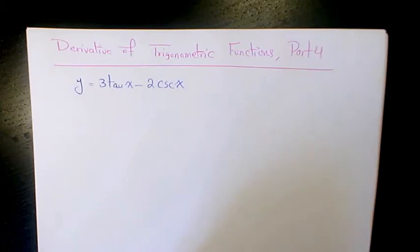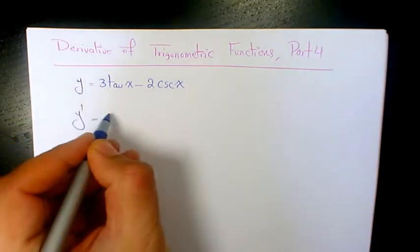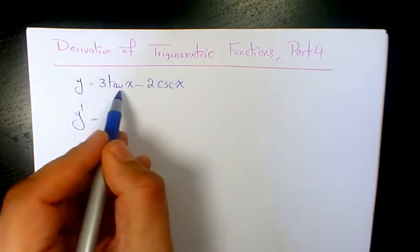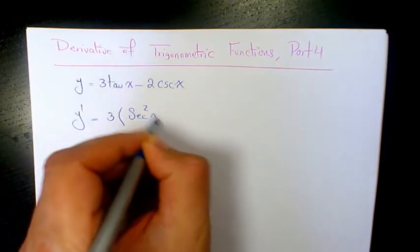What's up guys, this is Massey, welcome to another video. In this video I want to show you some examples regarding finding the derivative of trigonometric functions. The first example is y equals 3 tan x minus 2 secant x. We want to find y prime. The derivative of tan x is secant squared x.